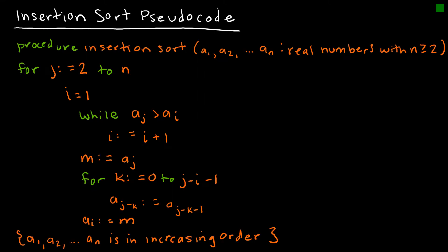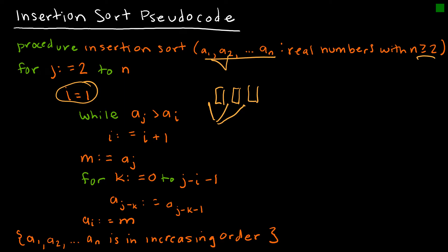The insertion sort pseudocode has quite a bit going on. Essentially, we take our values from 1 through n with at least two values. For j equals 2 to n, starting at i equals 1, we compare position 2 to position 1 and switch their order if necessary; if not, we move to the next one. Step by step, we look for where each value goes in the already-sorted portion of the list. The algorithm checks each location to determine correct placement, and the output is all values in increasing order.